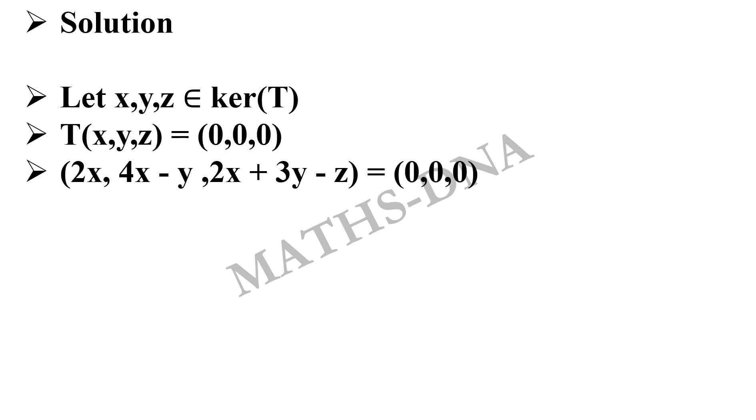From the transformation given to us, 2x equals 0, 4x minus y equals 0, and 2x plus 3y minus z equals 0. From the first equation, we get x equals 0, from the second, y equals 0, and from the third, z equals 0.